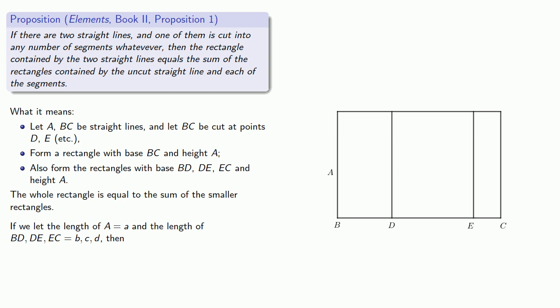If we let the length of AB be A and the lengths BD, DE, EC be equal to B, C, and D, then what this proposition is claiming is that the area of the whole rectangle, that's A times the length B plus C plus D, is equal to the areas of all these other rectangles put together: AB, AC, and AD. And this is the distributive property in algebra, but phrased using geometric language.